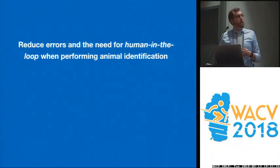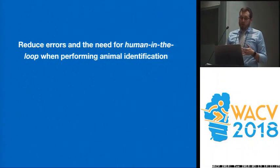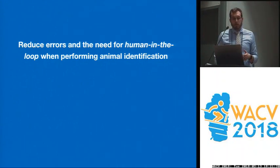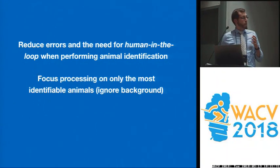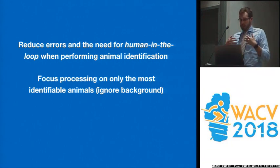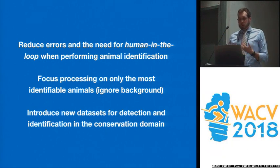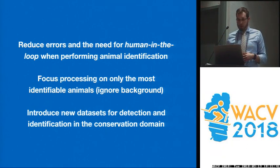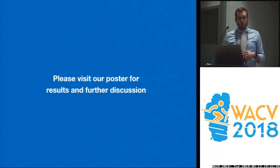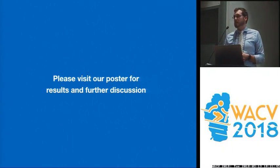In summary, the idea is to reduce errors and the need for human-in-the-loop reviewing for individual identification. We want to focus processing on the most identifiable animals, not background animals that are incidental. And we want to introduce a new dataset for detection and identification in this conservation domain. For further results, please come see Matt Publster. Thank you.